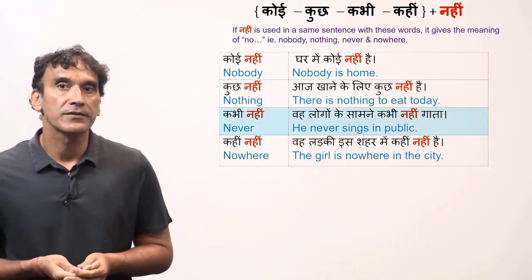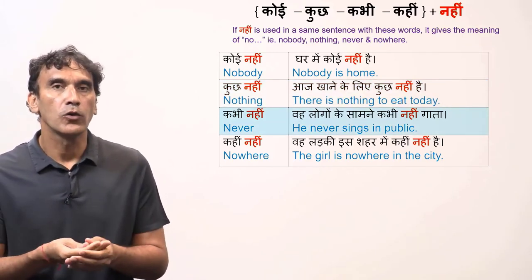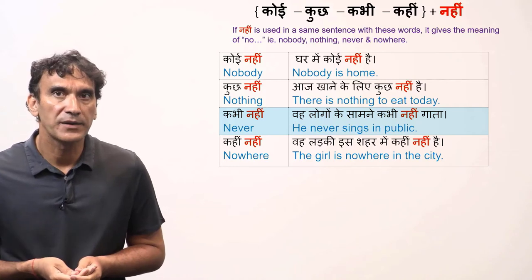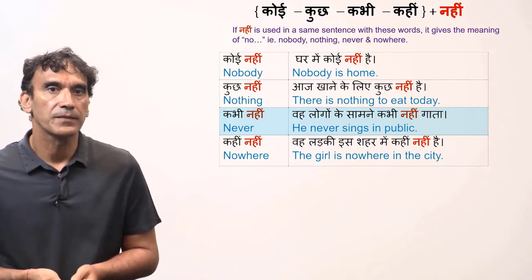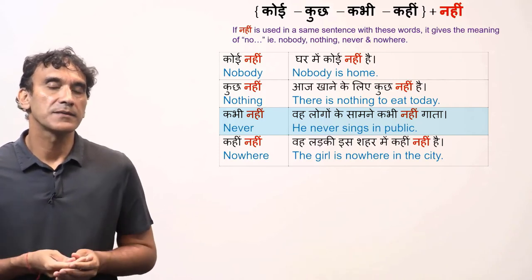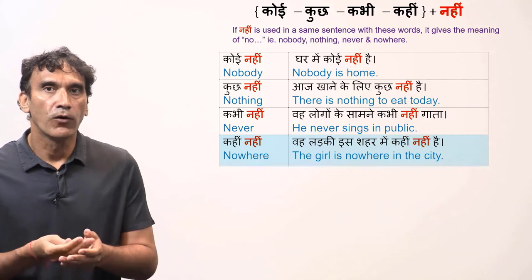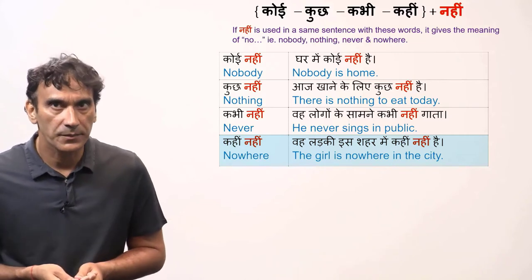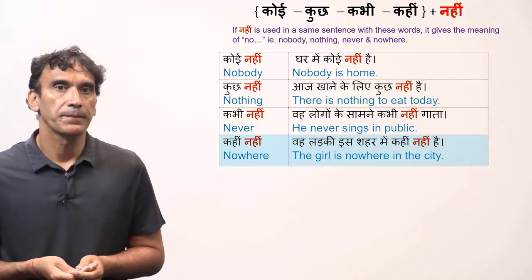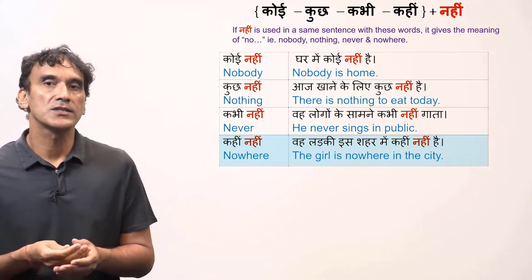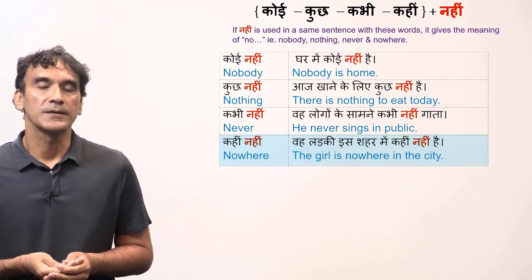Kabhi nahi means never. Woh logon ke saamne kabhi nahi gaata — He never sings in public. Kahin nahi means nowhere. Woh ladki is shahar mein kahin nahi hai — The girl is nowhere in the city.